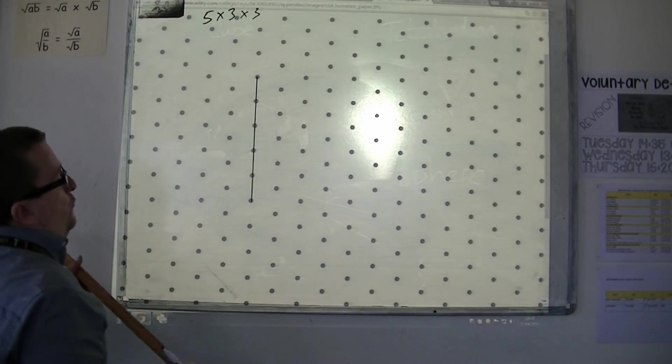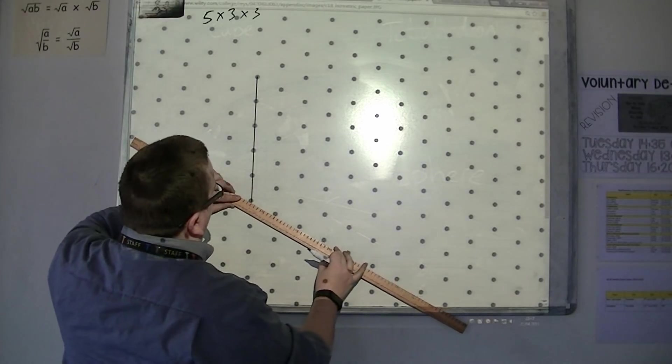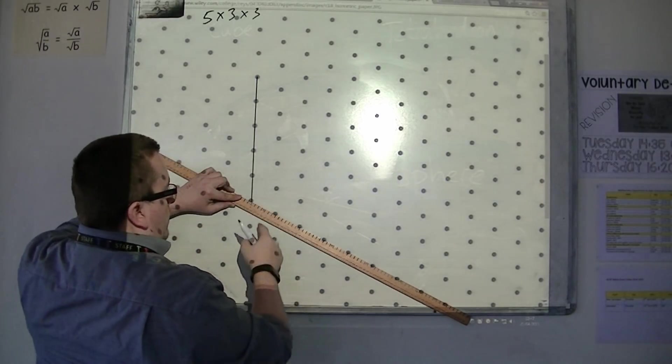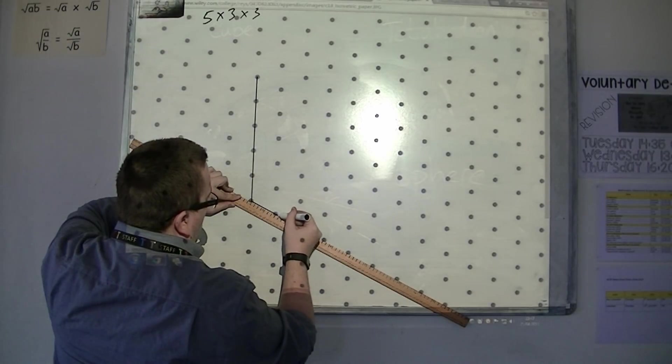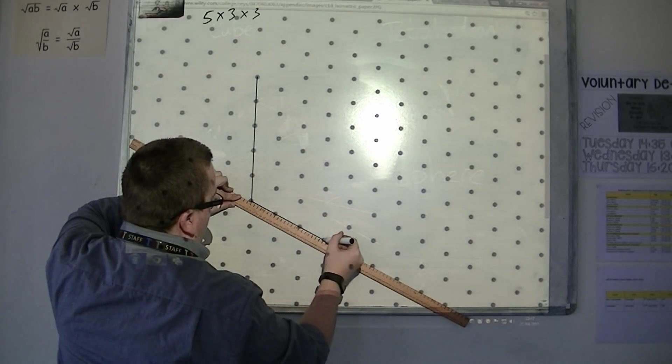Then, it's 3 centimeters for its base. So, in order to draw from a point through, I'm going to have to go 1, 2, 3 in that direction.